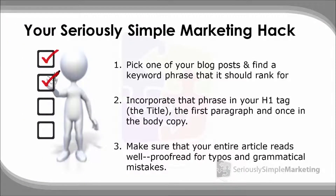Here's your seriously simple marketing hack — the one action step to focus on: First, find one of your existing blog posts. Determine what keyword or keyword phrase it should be ranking for. Then check: have you incorporated that phrase in your H1 tag — the title? Is it in your first paragraph? And does it appear at least one other time in the body, either in the middle or toward the end? Finally, make sure the entire article reads well — proofread for typos and grammatical errors.